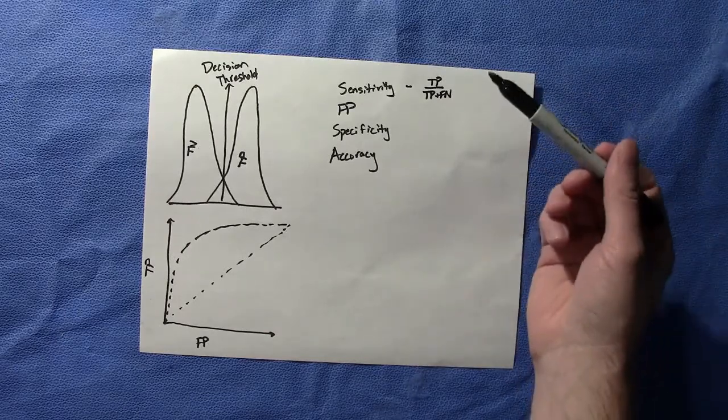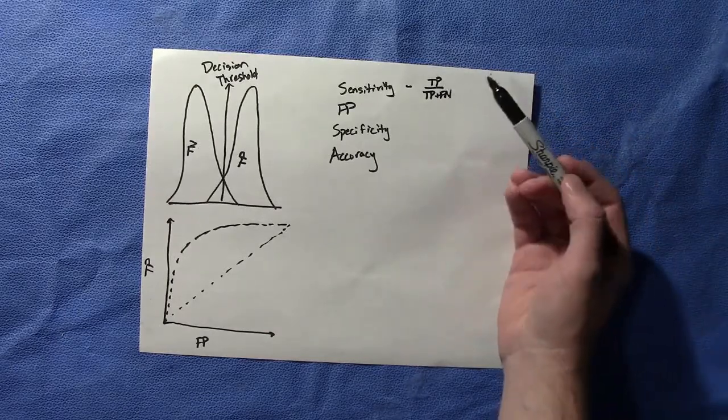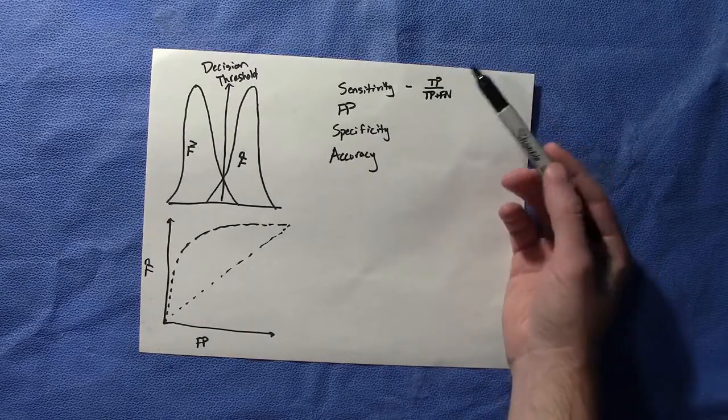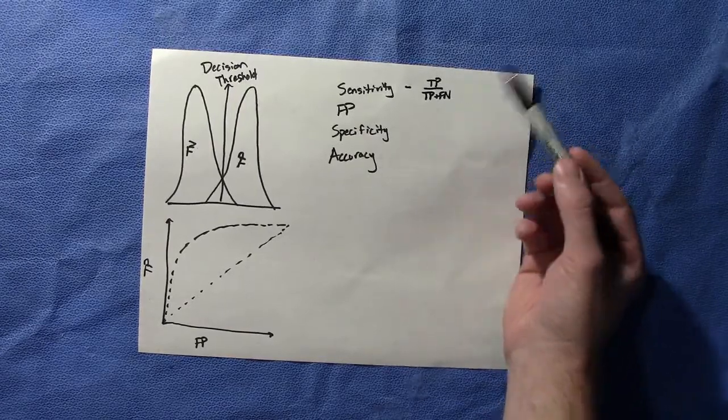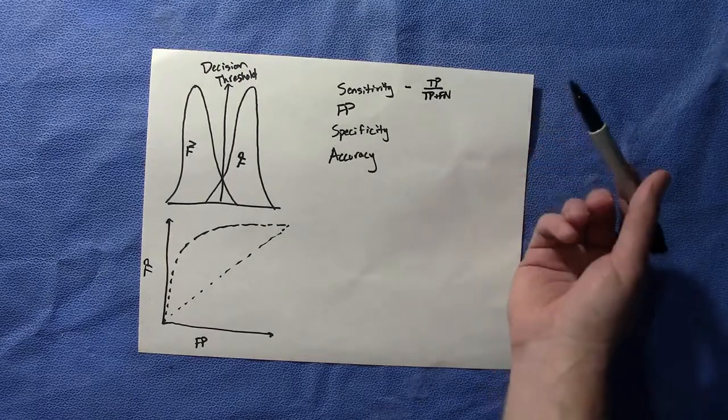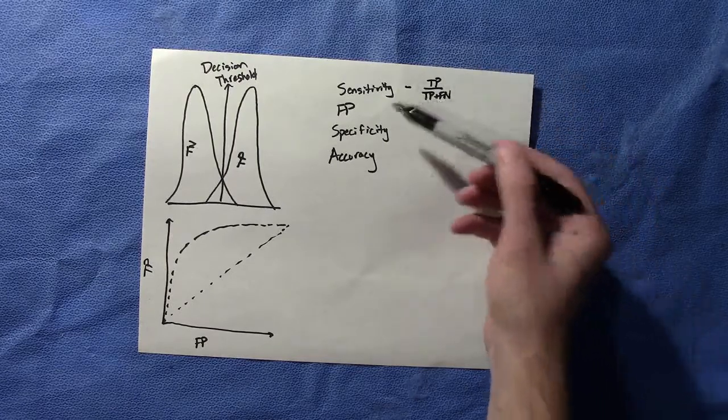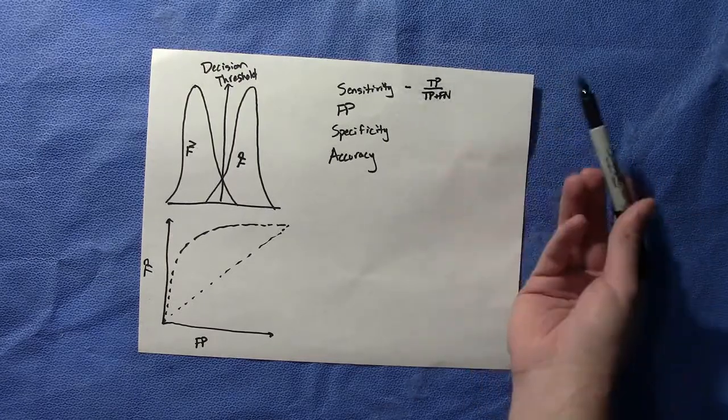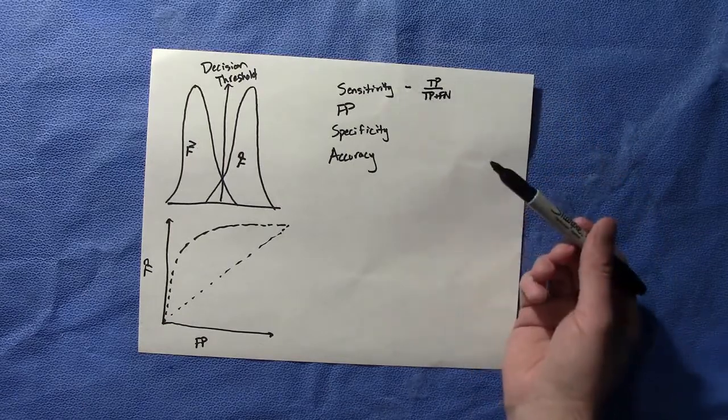And they're going to give you an actual number for true positives, false negatives, and all the rest of these. And you're actually just going to have to plug in numbers. So very well maybe like 100 over 100 plus 50. You get a certain number and a percentage and that's your sensitivity.